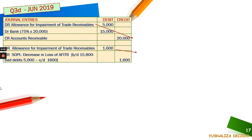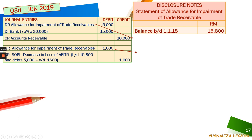First, you need to understand that before you can set up the disclosure notes or the movement of allowance, it is best to start doing your journal entries. I'm reproducing the journal entries for what you have done before this. This is for the adjustment on allowance for impairment that relates to account receivable being written off and also the payment received from the customer. This is the transaction where you record the payment received as well as write off the bad debts.